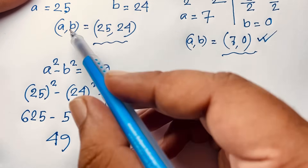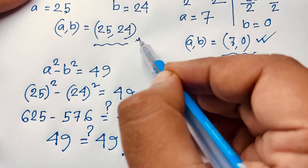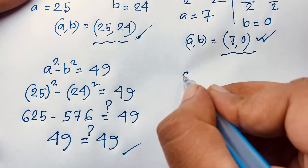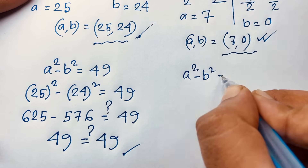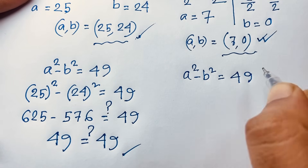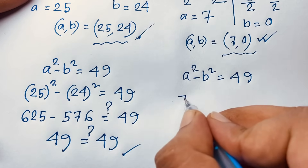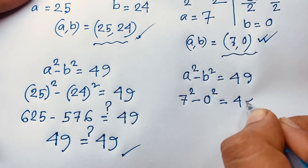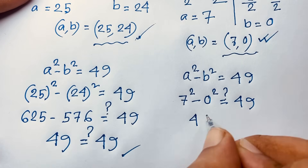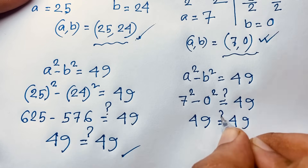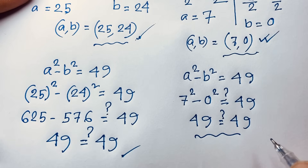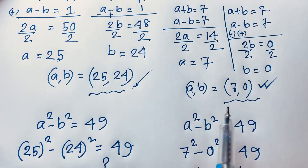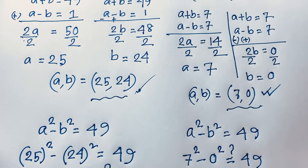So the first final answer is a = 25, b = 24. For (a, b) = (7, 0): 7² - 0² = 49 - 0 = 49, which also equals 49. So the complete final answers to this math problem are (a, b) = (25, 24) and (a, b) = (7, 0).